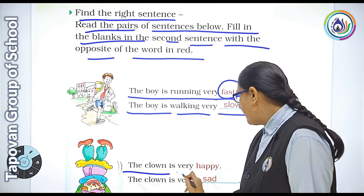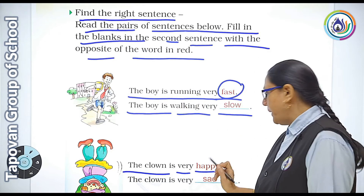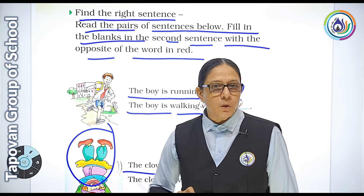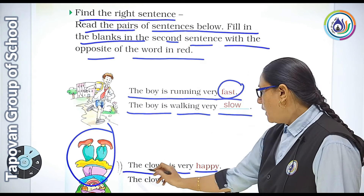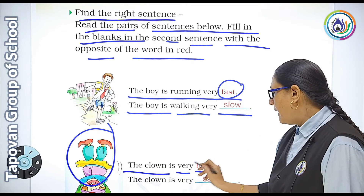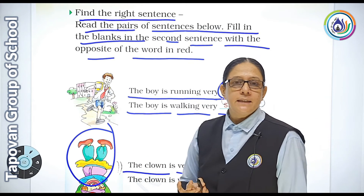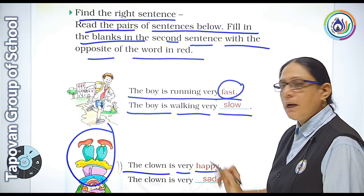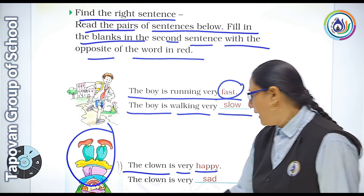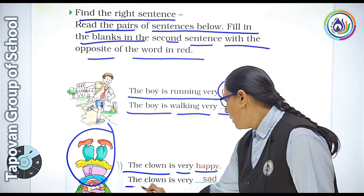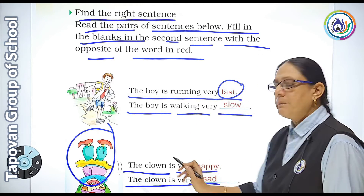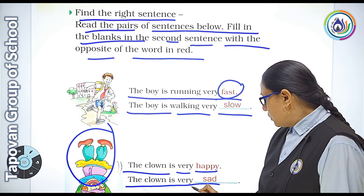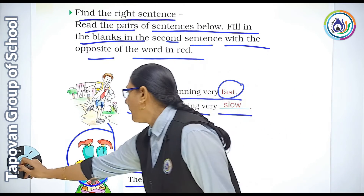The clown is very happy — clown ka matlab hota hai joker. The opposite: the clown is very sad, meaning the joker is very unhappy.